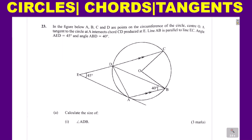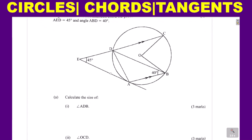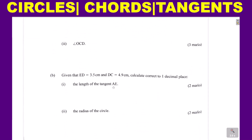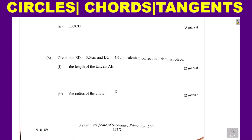Question A: calculate the size of (1) angle ADB, and (2) angle OCD. Part B: given that ED equals 3.5 centimeters and DC equals 4.9 centimeters, calculate correct to 1 decimal place: (1) the length of the tangent AE, and (2) the radius of the circle.